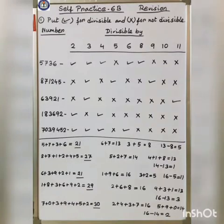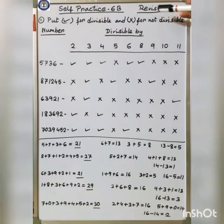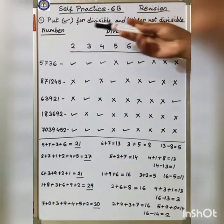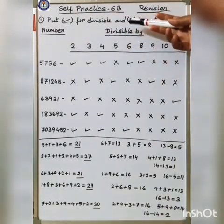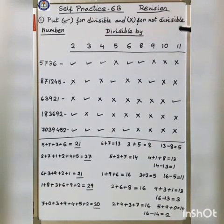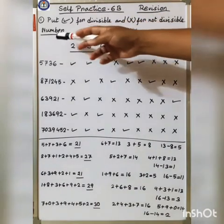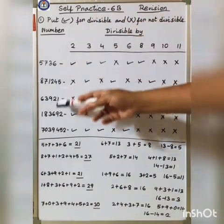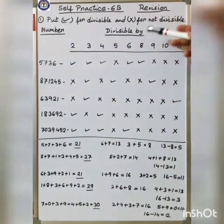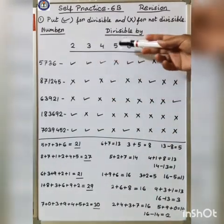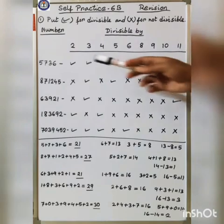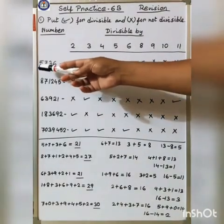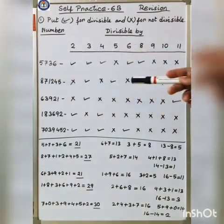Good morning students. Today we will be revising chapter 6b. The question is to put a tick for divisible and a cross for not divisible. Some numbers are given and we check if they are divisible by 2, 3, 4, 5, 6, 8, 9, 10, and 11. The first question is 5736.